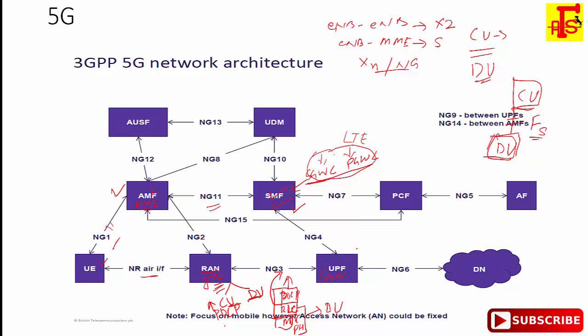The UPF is the User Plane Function. It is responsible for the Serving Gateway user plane and PDN Gateway user plane, which in LTE were handled separately. In 5G, UPF is responsible for both. Its functions include packet routing and forwarding, packet inspection, QoS handling, mobility anchoring for intra-RAT and inter-RAT handover, and maintaining and reporting traffic statistics.